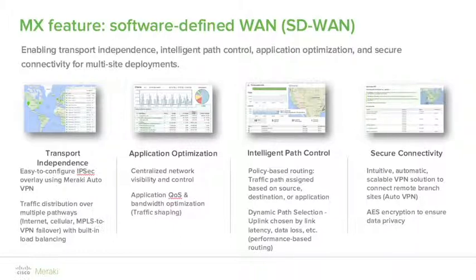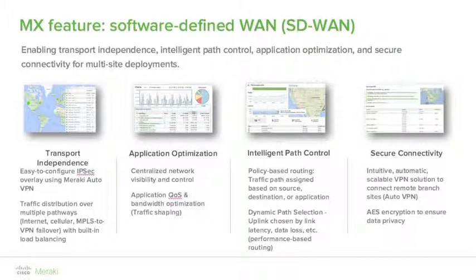Meraki supports not only failover and load sharing, but granular intelligent path selection based on individual traffic flows and traffic types. You can set specific rules based on source address, destination address, port number, application type, or a combination. As well as brute failover when a link goes down, we also support soft failover of individual traffic types based on custom criteria. For example, VoIP traffic should be on a path with less than 150 milliseconds of delay. The MX device will monitor these thresholds and dynamically move voice traffic to a more suitable WAN connection — no manual intervention required.